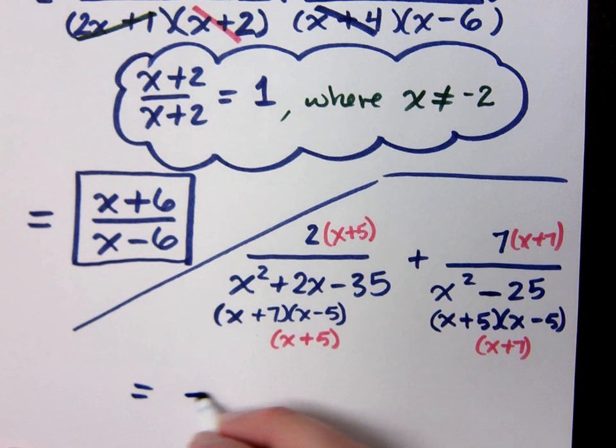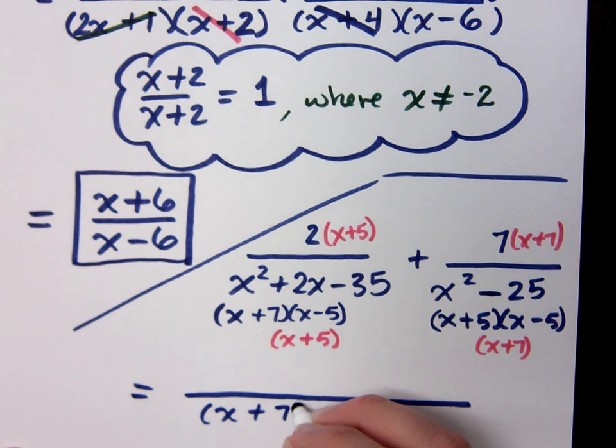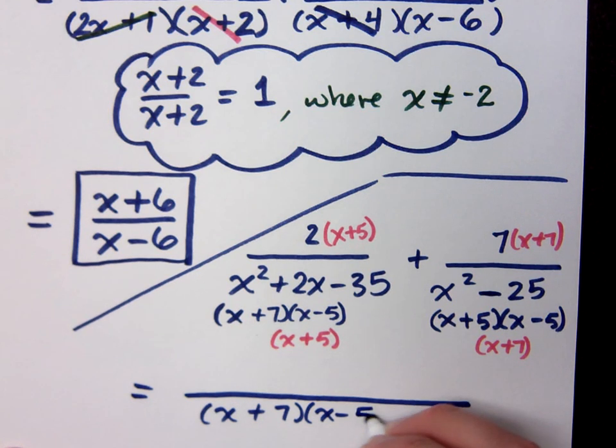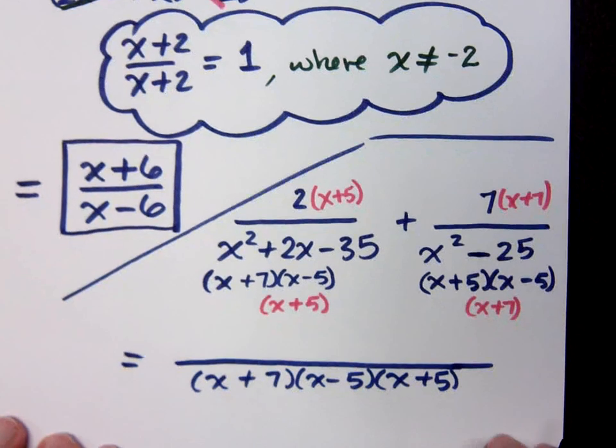Now when we did these before, it's one huge fraction. And you've got your factors down here. Does the order of the factors matter? It doesn't because it's multiplication.